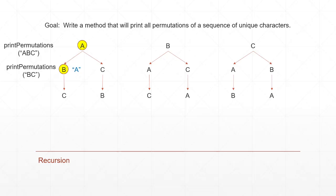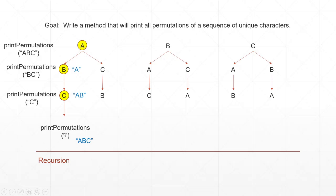We pick B, then call printPermutations again, this time removing B because we've already used it. Now we look for permutations with just the letter C. Whatever permutations exist, we print them with A and B first because we've committed to A first, then B, then whatever remains — in this case just C. Once we're done with C, we add it to our current permutation A-B-C and print it. Each time we recursively call this method, we remove the letter we've chosen: we chose A so we take off A, we chose B so we take off B, and so on.